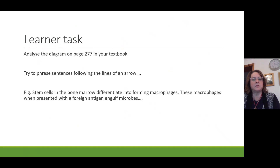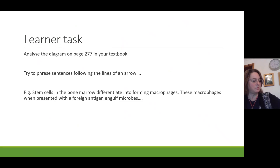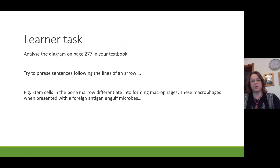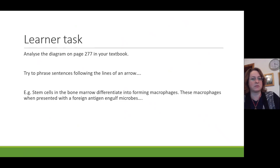The flowchart I mentioned earlier is on page 277 in the textbook. It's a flowchart which starts with the stem cells in your bone marrow and ends up with all your different cells and the communication between them. I believe this flowchart is really worth looking at - I'm sure you can find the textbook in the link already.